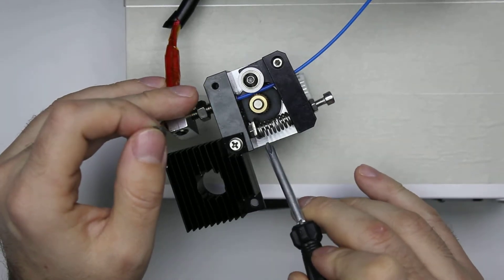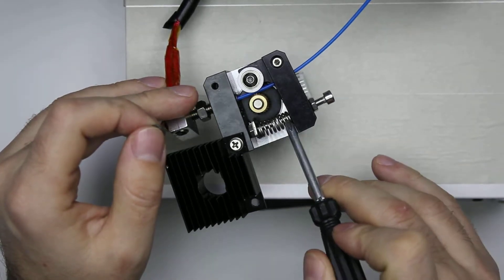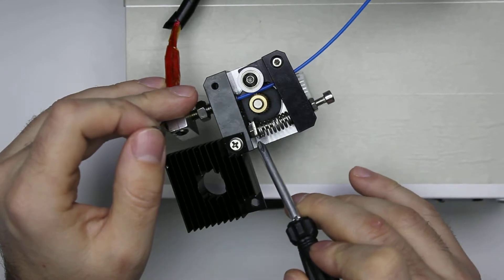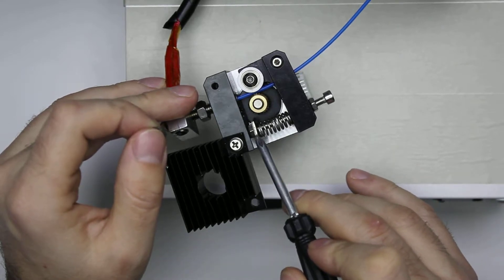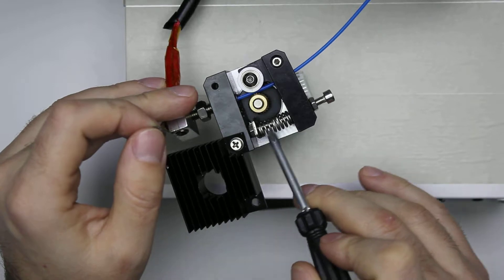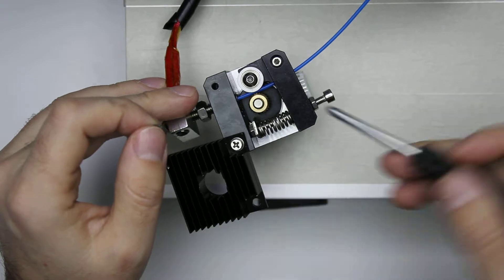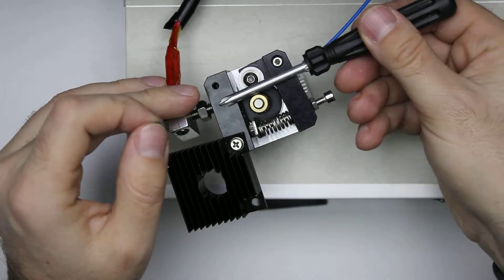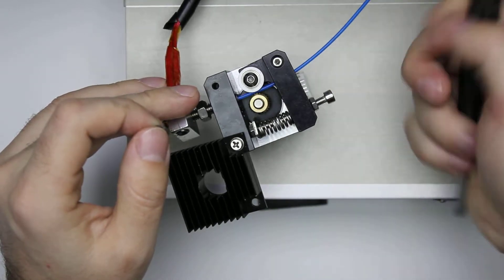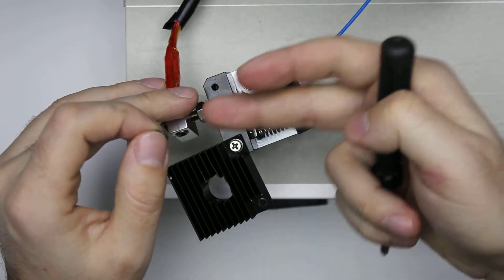This one here just holds the spring and prevents it from going over the nut again. So this just fixes the tension, and the extruder now can firmly grip the filament and it will go through the nozzle just fine.